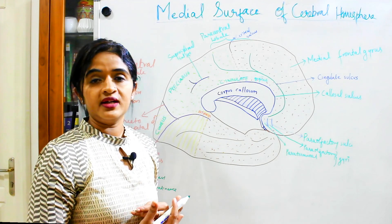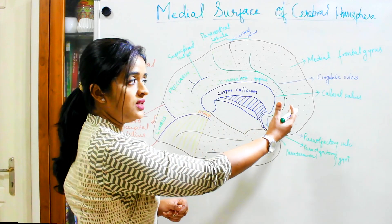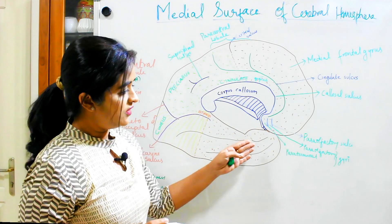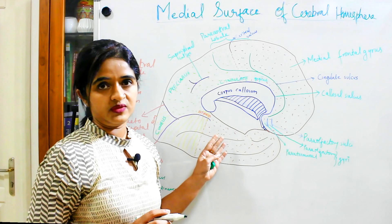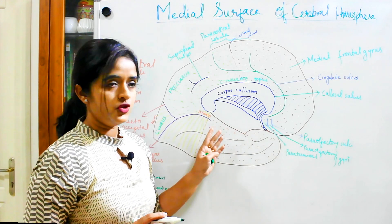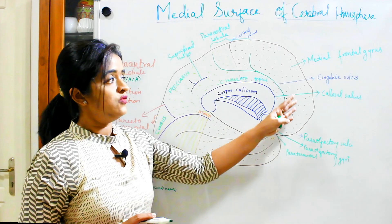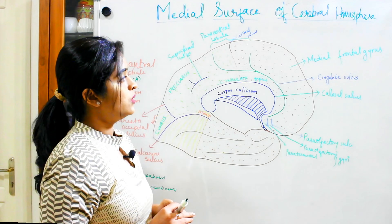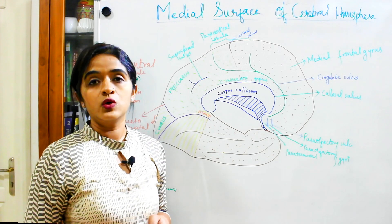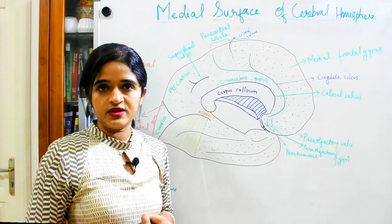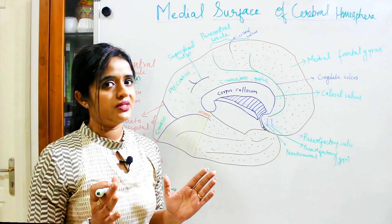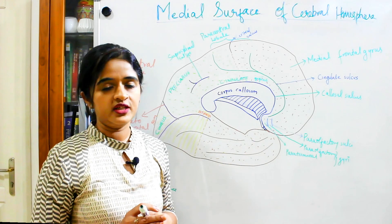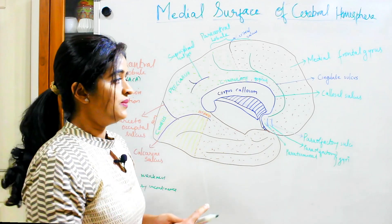The remaining sulci and gyri on the medial surface are arranged in front, superior, and posterior to the corpus callosum. The inferior aspect belongs to the inferior surface of the cerebral hemisphere, so in this session we are not going to mention any features of the inferior surface — we are just focusing on the medial surface. Let's see which are the main sulci on the medial surface. First I will mention the main sulci, then describe in detail the important gyri seen in relation with each sulcus.